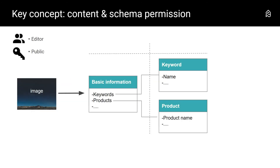Now there is one more key concept to explain: there are two types of permissions — content permissions and schema permissions. If we stay with our example image, which has the permission 'public' and on which the user role editor has the rights to edit metadata: if our editor uploads this image and wants to add a keyword, she can choose from the already available keywords. But if the keyword is not available, she can create a new keyword, which is automatically stored in the list 'keyword.'